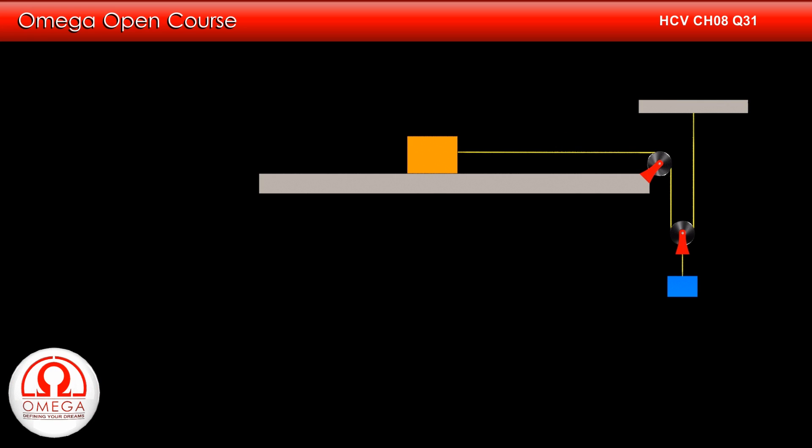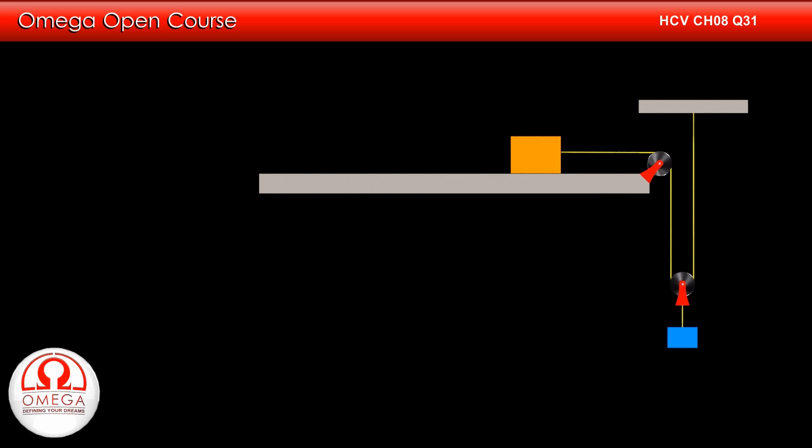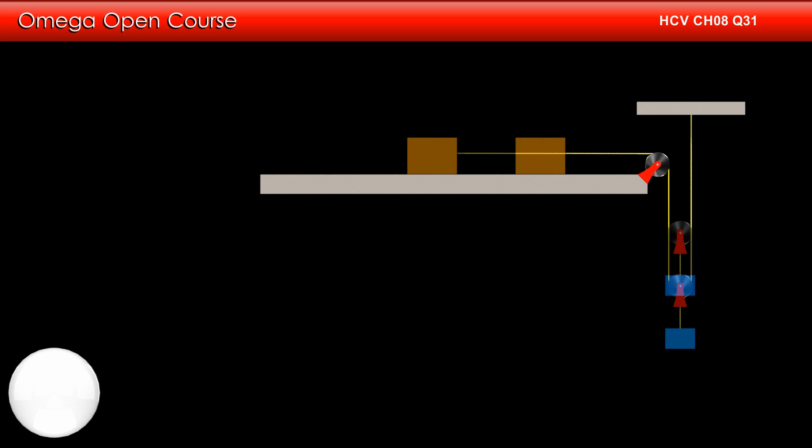When the pulley moves, it takes string with it on its both sides. So the string pulled by the pulley is twice as much as it moves down. In order to provide that much of string, the block on the table will have to move twice the distance the pulley moves. So the block on the table moves twice as much as 1 kg block moves.